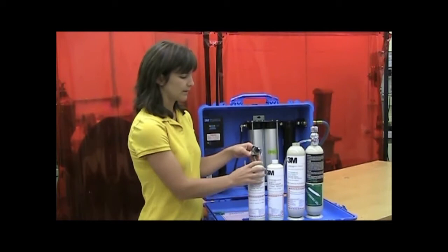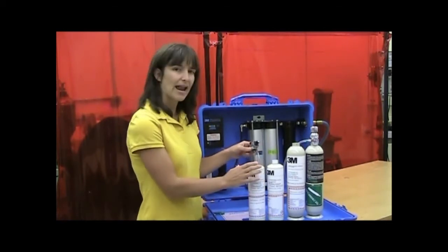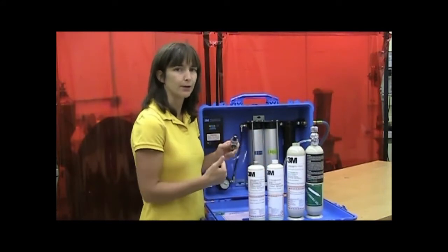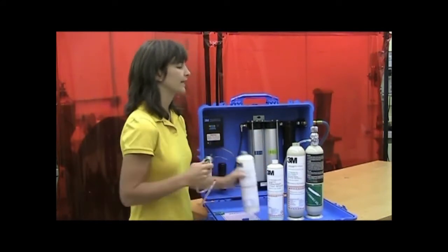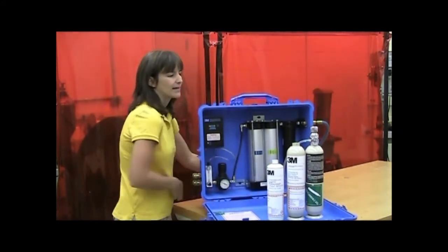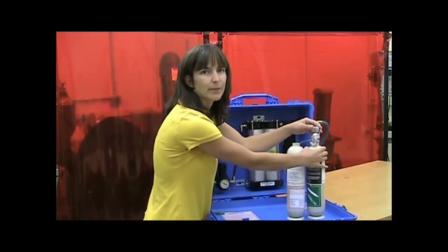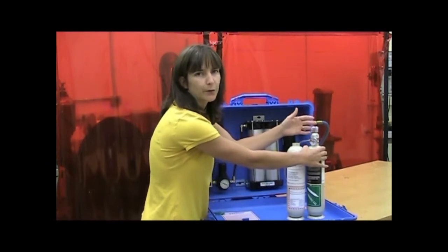The regulator that comes with the small kit does not have an on and off. So once the regulator is attached to the bottle, air is flowing. For the large kit, the regulator has an on and off so you can help conserve calibration gas by turning the flow off when you don't need it.